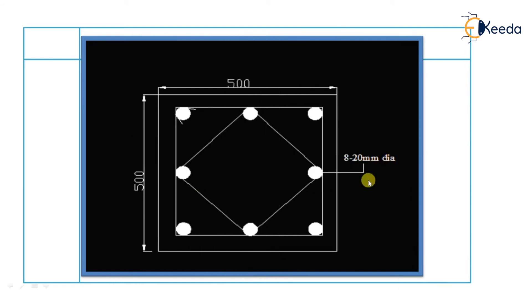And here is the cross section. You can see that the 8 bars are provided here, 8 bars of 20 mm diameter and the cross section is of 500 by 500 mm. And here we are providing 2 ties.